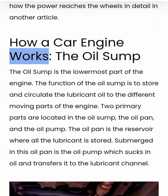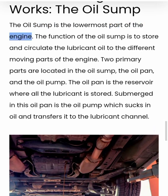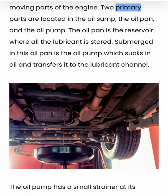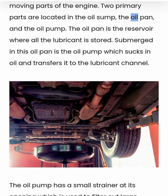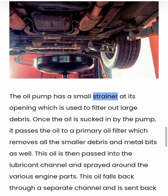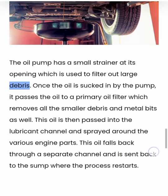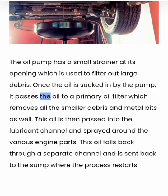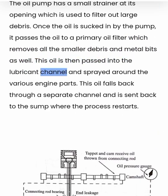The oil sump is the lowermost part of the engine. Its function is to store and circulate the lubricant oil to the different moving parts of the engine. Two primary parts are located in the oil sump: the oil pan and the oil pump. The oil pan is the reservoir where all the lubricant is stored. Submerged in this oil pan is the oil pump, which sucks in oil and transfers it to the lubricant channel. The oil pump has a small strainer at its opening to filter out large debris. Once the oil is sucked in by the pump, it passes through a primary oil filter which removes all the smaller debris and metal bits as well. This oil is then passed into the lubricant channel and sprayed around the various engine parts, then falls back through a separate channel and is sent back to the sump where the process restarts.